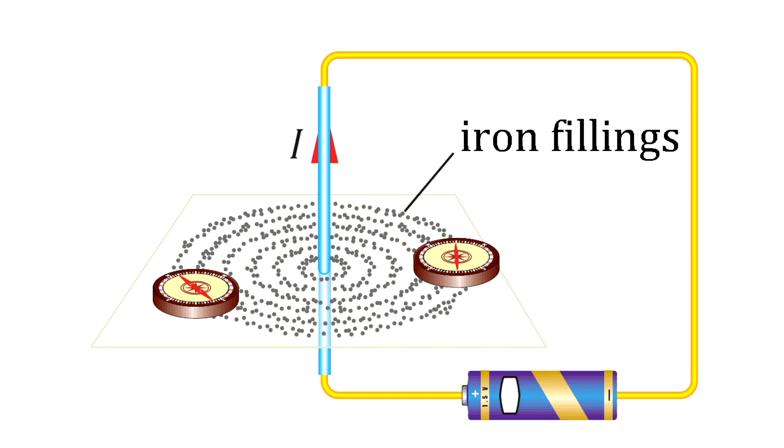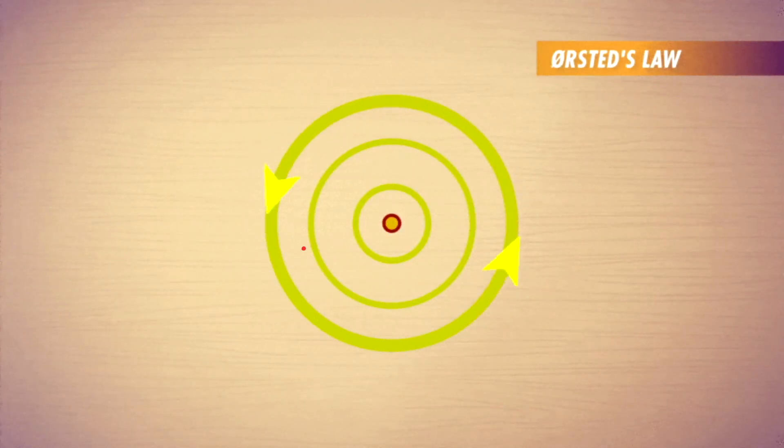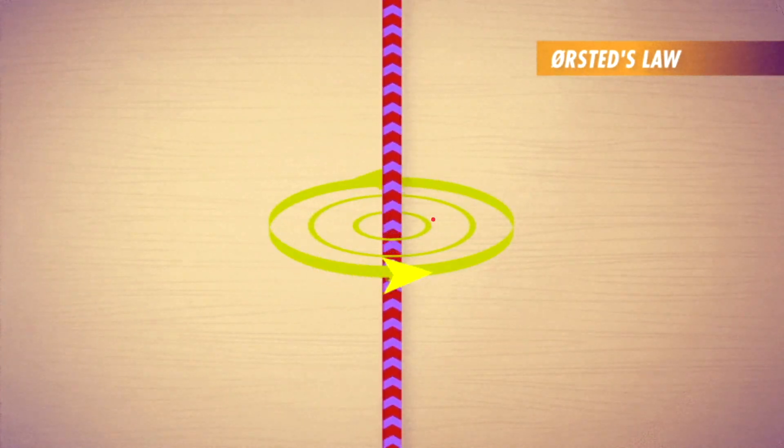We said that Ørsted did some experiments, so pay attention to this demonstration. When a current passes through a wire as shown in the picture, the compass will align in a circular pattern around the wire. It can be deduced that the magnetic field lines around the current carrying conductor form concentric circles with the wire at their center. And if the current was coming straight towards you, the field lines would be pointing counter-clockwise.